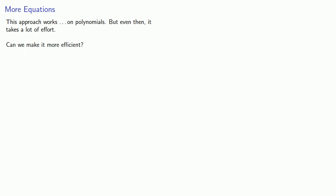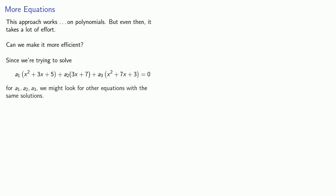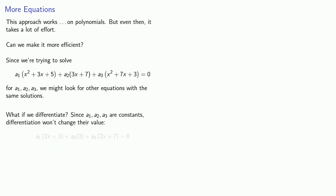This approach works on polynomials, but it takes a lot of effort. An important question is: can we make this more efficient? Since we're trying to solve a linear combination equal to zero for a1, a2, and a3, we might look for other equations with the same solutions — and here we invoke a little calculus. If I differentiate the equation, because a1, a2, and a3 are constants, differentiation won't change their values. However, it will change the function expressions and give us a new equation involving a1, a2, and a3.